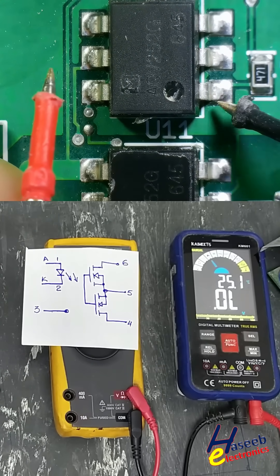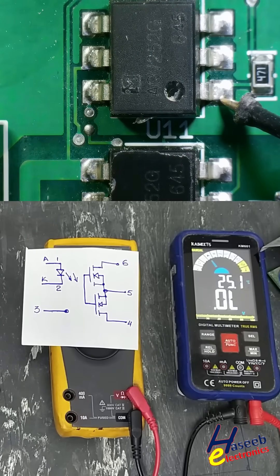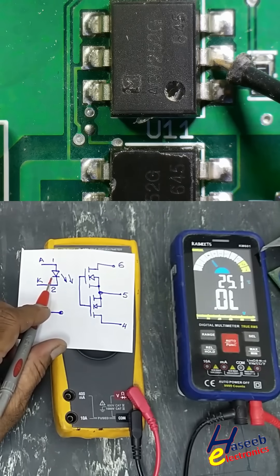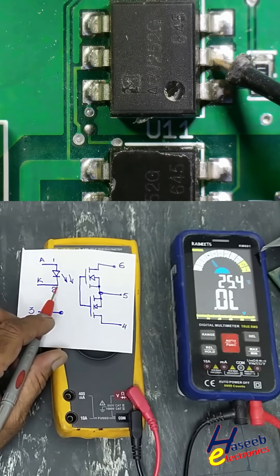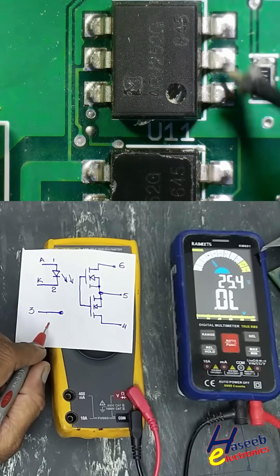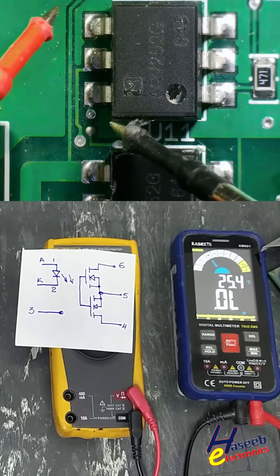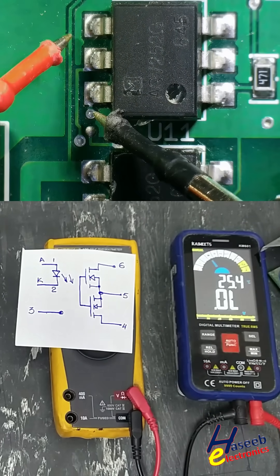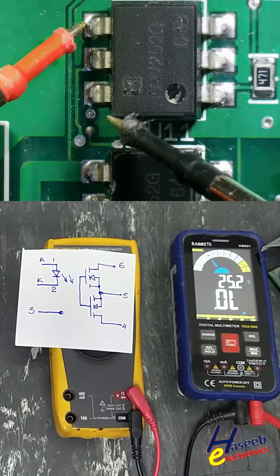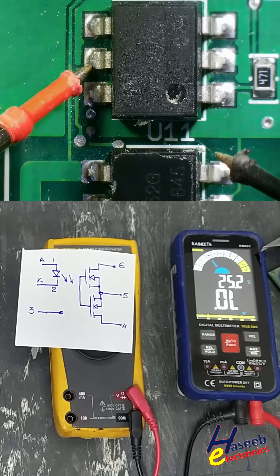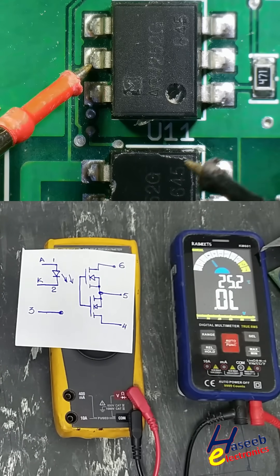Pin number 1 is the anode. Pin 2 is the cathode. This is the LED. Pin 3 is not connected. Pin 4 and pin 6 are the drain pins. This is the source pin.